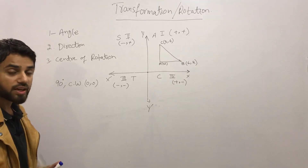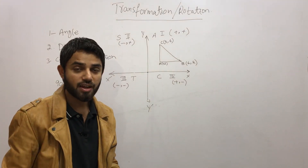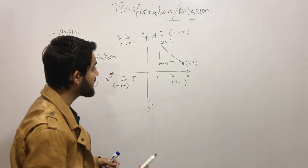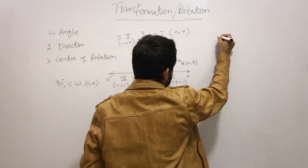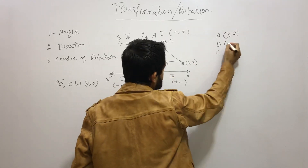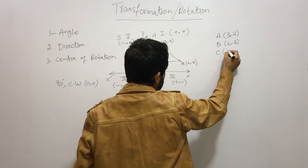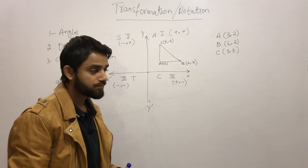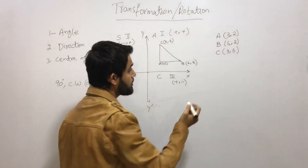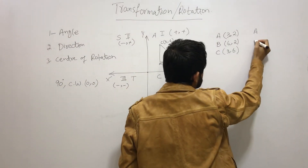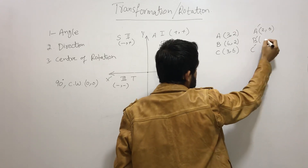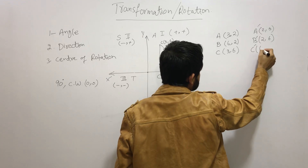Students usually use the tracing method, but I am going to give you a quicker and easier method. Write the coordinates: A(3, 2), B(6, 2), C(3, 6). When rotating clockwise with the origin as center, simply switch the places of X and Y. So A becomes (2, 3), B becomes (2, 6), and C becomes (6, 3).